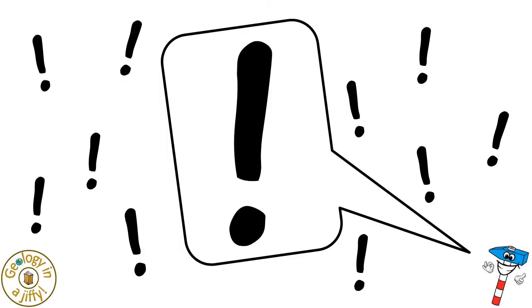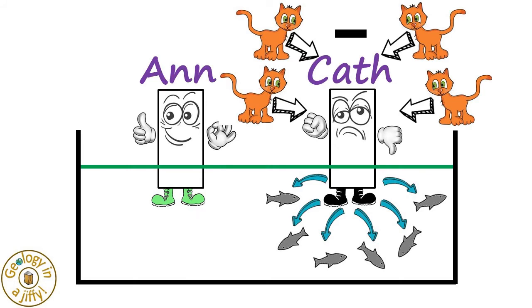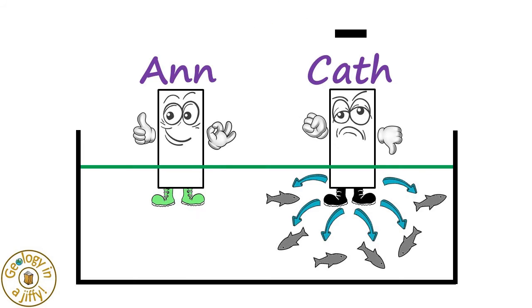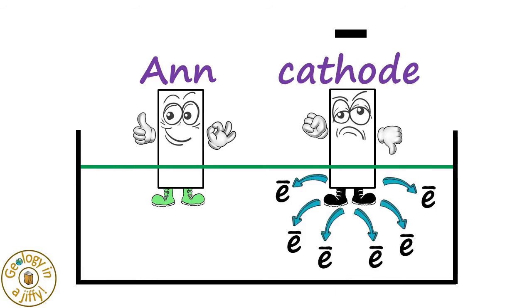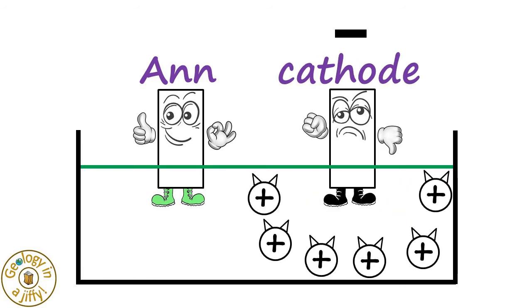That's amazing! So instead of Kath attracting cats by giving out fish, which does not happen, the negative cathode gives out electrons which the positively charged cations are attracted by.